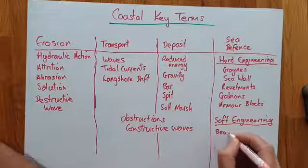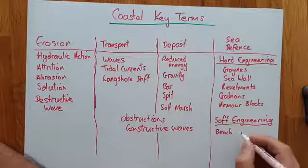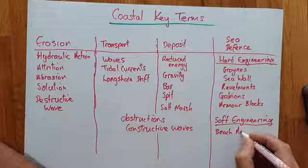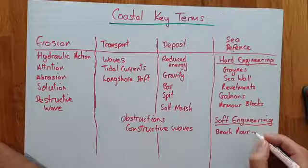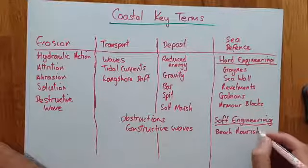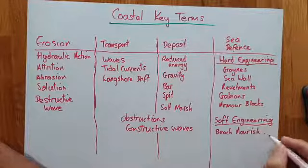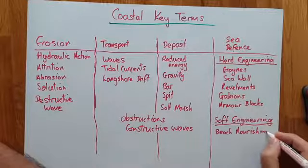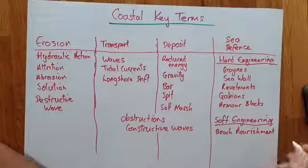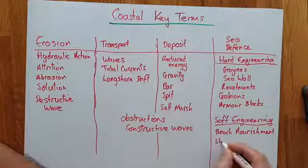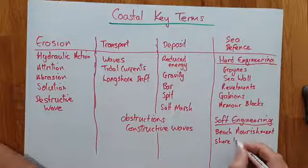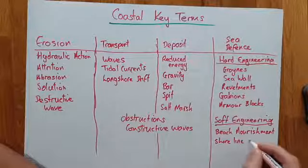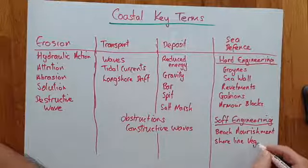The other category of sea defenses is called soft engineering. Examples include beach nourishment, which is basically dragging the sand back out of the sea and up the beach shoreline, and vegetation.